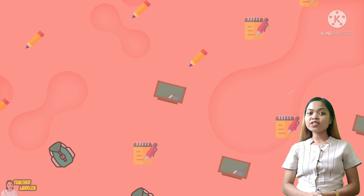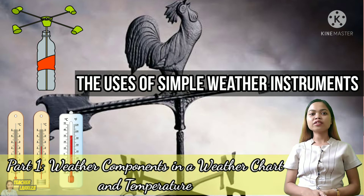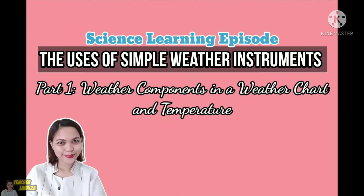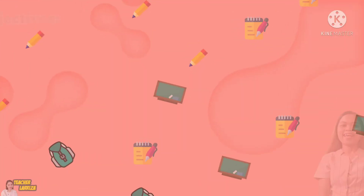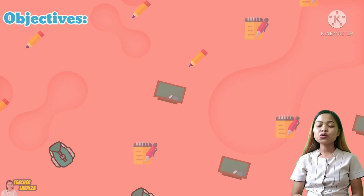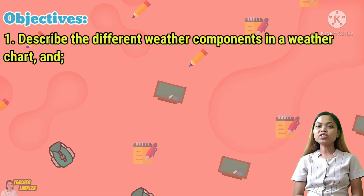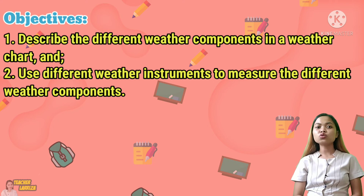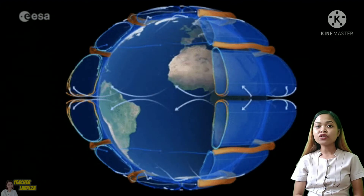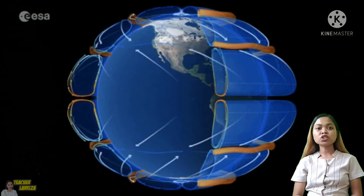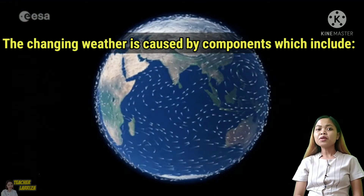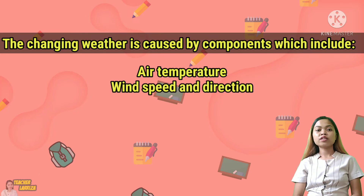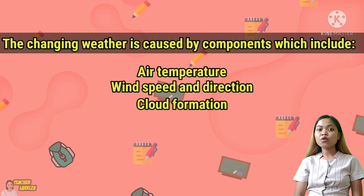Now that you know the importance of water cycle, we can now move forward to our next science lesson, which is entitled The Uses of Simple Weather Instruments. At the end of this video lesson, you are expected to: 1. describe the different weather components in a weather chart, and 2. use different weather instruments to measure the different weather components. The Earth is surrounded by a blanket of air called the atmosphere. The conditions of the atmosphere give rise to weather conditions. Ang pagbabago ng ating panahon ay sanhi ng mga salik nito na binubuo ng air temperature, wind speed and direction, and cloud formation na maaari nating sukatin gamit ang iba't ibang weather instruments.